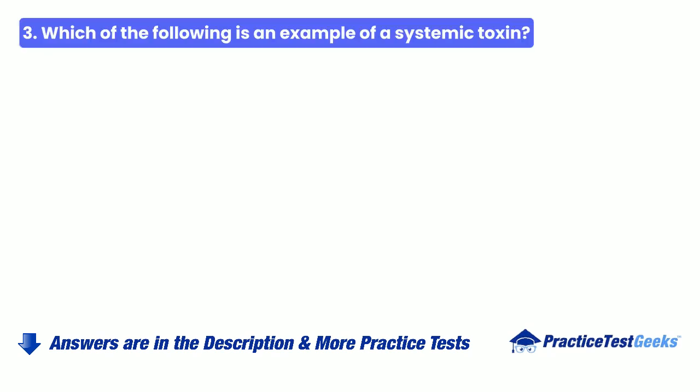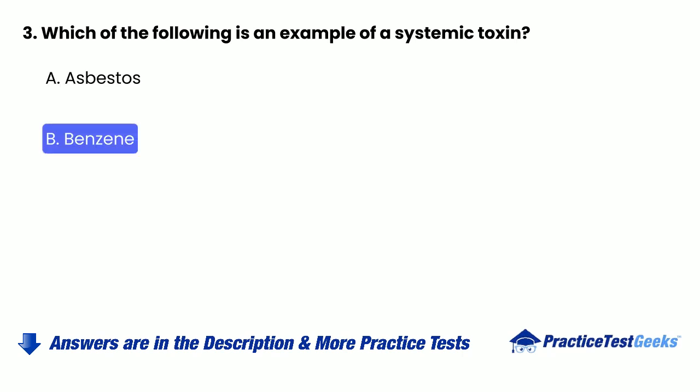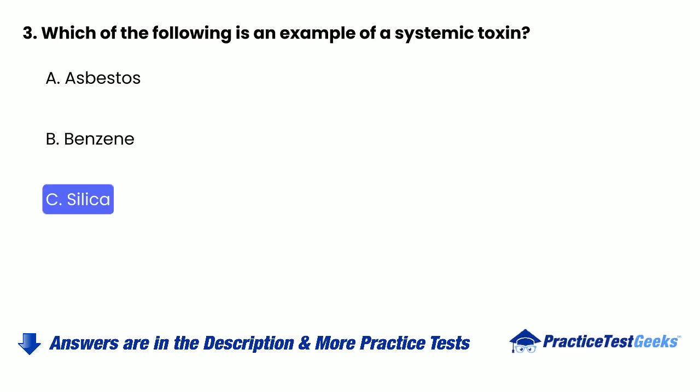Question 3: Which of the following is an example of a systemic toxin? A. Asbestos. B. Benzene. C. Silica. D. Noise.